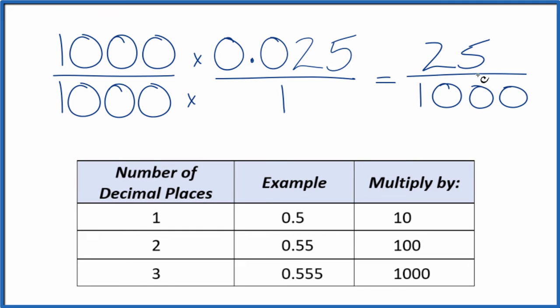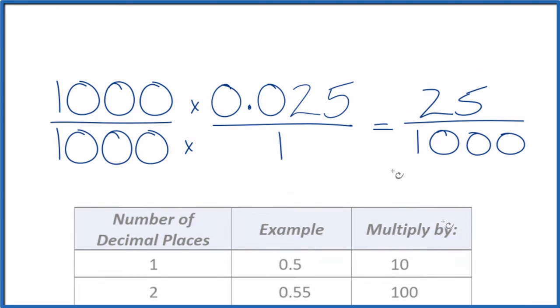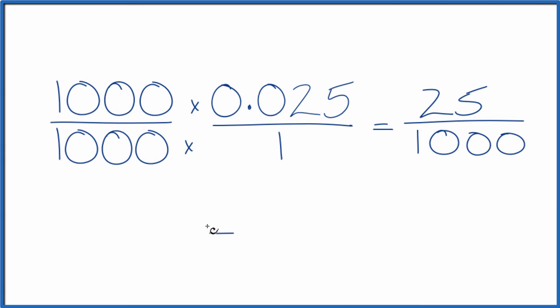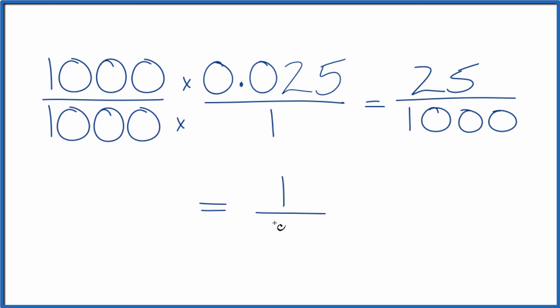We could simplify this a little bit further. 25 should go into itself, and it should go into 1,000 evenly. Let's try that. 25 divided by 25, that's just 1, and 1,000 divided by 25 is 40. So we end up with the fraction 1 over 40.